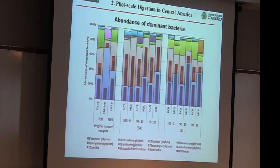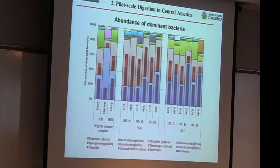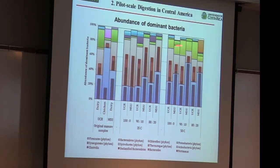One slide on the microbial community work: looking at digesters with chicken manure and dairy manure from Costa Rica, and dairy manure from Michigan State, with blends of food waste at different temperatures. We do start to see differences forming in the communities inside — in the predominant microorganisms involved. We really have two dominant forms, but we do see some slight differences in minor bacteria and microorganisms, which is what we'd expect.